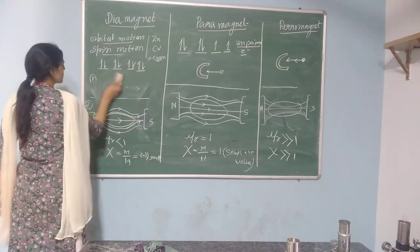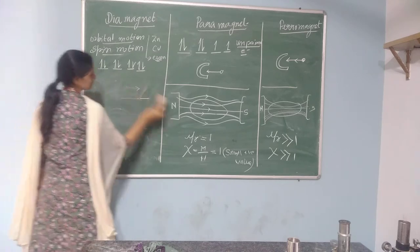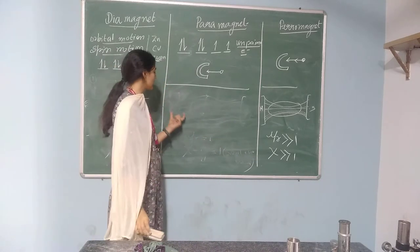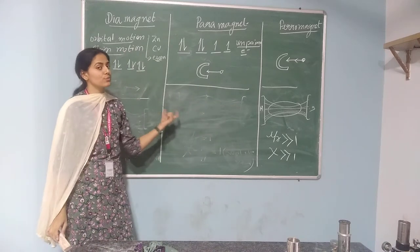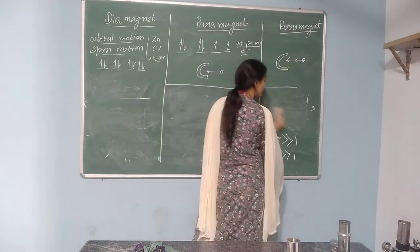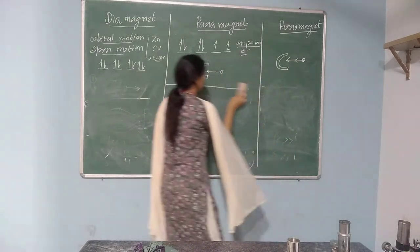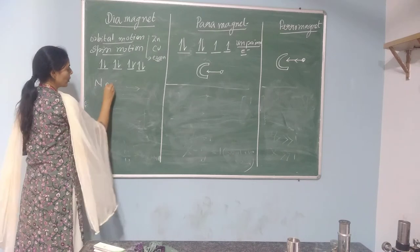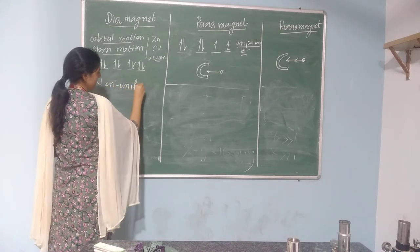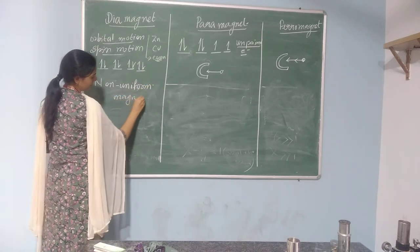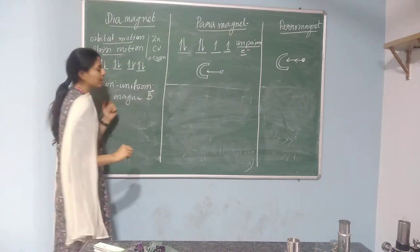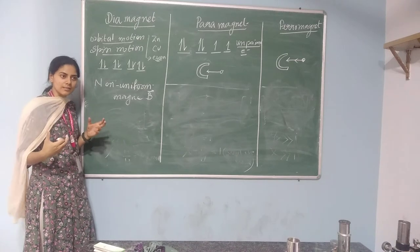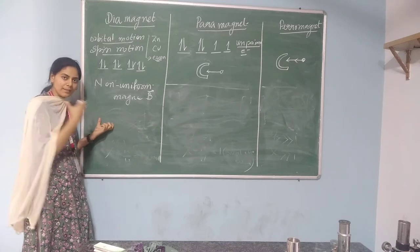We can also differentiate the three materials on the basis of a non-uniform field. We have seen the case where we applied a uniform field. Now if we apply a non-uniform magnetic field — where in some parts the magnetic field will be larger and in other parts the magnetic field will be less — the intensity of the magnetic field varies across regions.